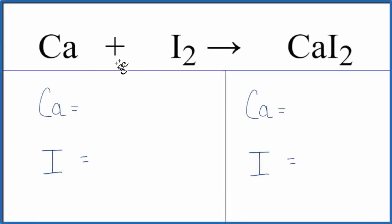To balance the equation Ca plus I2 yields CaI2, we'll first count the atoms on each side of the equation.